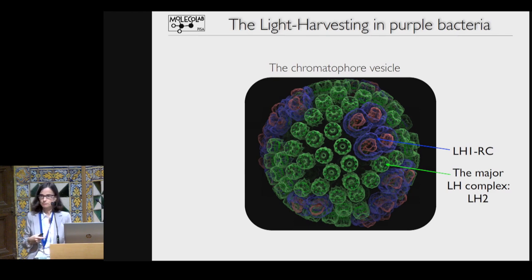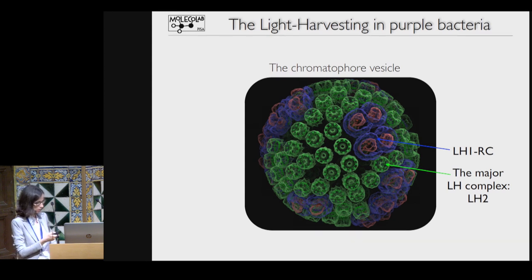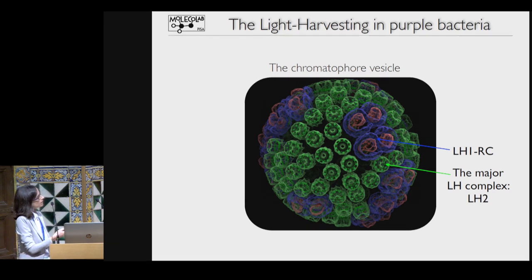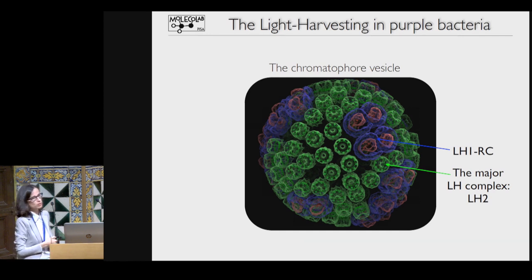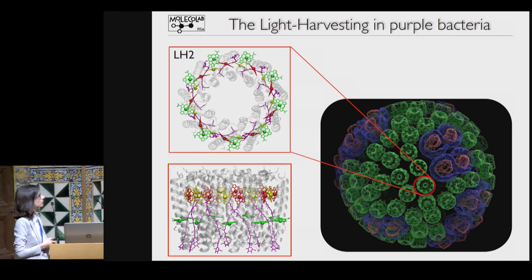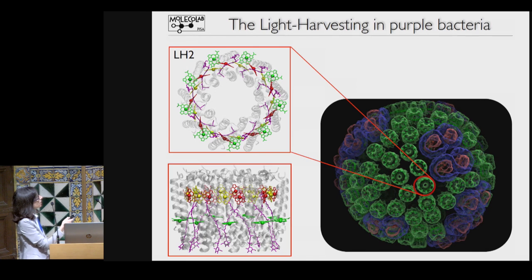Today I'll present an application of quantum chemical-based approaches to study a light-harvesting system. In particular, I will focus on a light-harvesting system present in purple bacteria. Here is the photosystem vesicle, which contains the reaction center in red, surrounded by the light-harvesting system, and the green stuff is the major light-harvesting antenna called LH2. If you look more closely at the structure of LH2, you see the composition in terms of many pigments: bacteriochlorophyll and carotenoids, arranged in a circular structure.